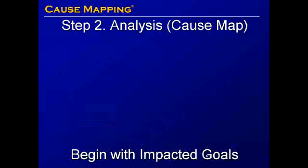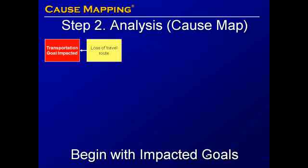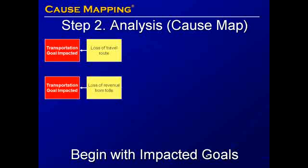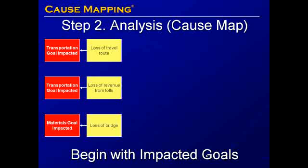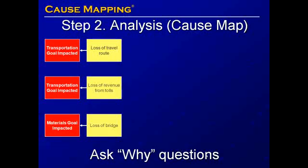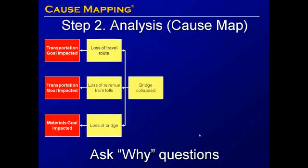We use the impacted goals to begin step two, our analysis, or our cause map, and we begin with those impacted goals. The transportation goal was impacted due to the loss of travel route and the loss of revenue from tolls. The materials goal was impacted due to the loss of the bridge. We then ask why questions to add more detail to the right of our cause map. All of the impacted goals resulted from the collapse of the bridge. Why did the bridge collapse?